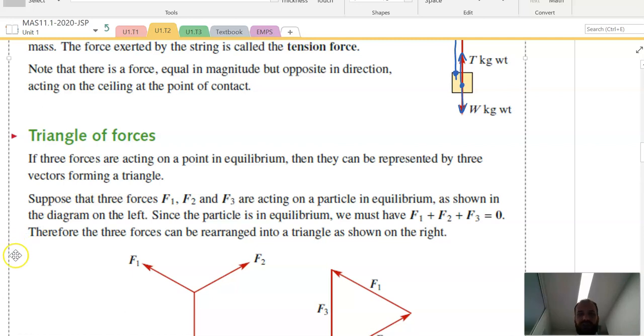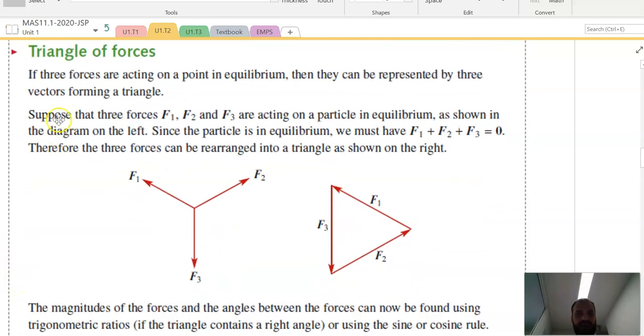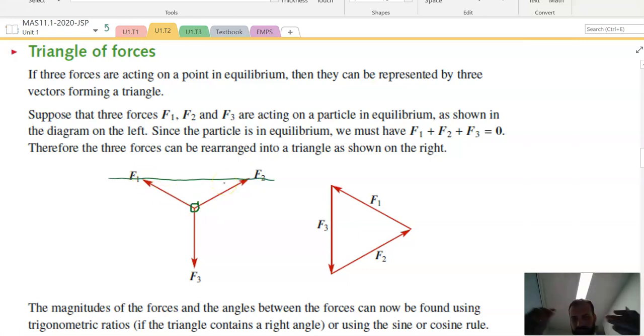Okay, that brings us to the triangle of forces, which we have covered before. If three forces are acting on a point in equilibrium, then they can be represented by three vectors forming a triangle. So if you imagine, here's an object being held up by two strings connected to the ceiling. The weight is pulling, the gravity is pulling the object down.